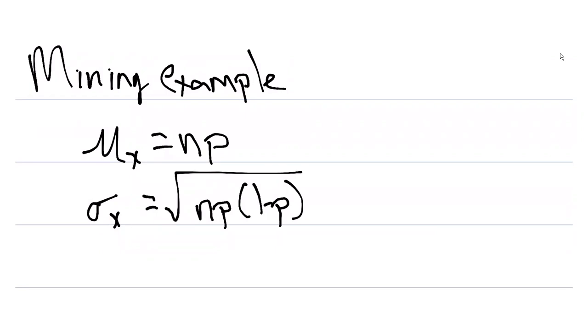So here remember the mean and standard deviation formulas. For the mining example we know that we surveyed 603 participants, so that's our n value, and we know that 54% of them, or a proportion of 0.54, said they supported mining. So our mean value then would be 326.